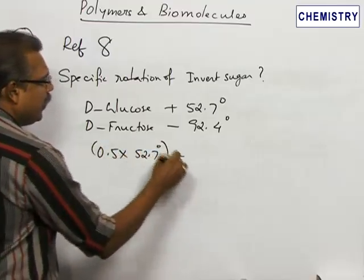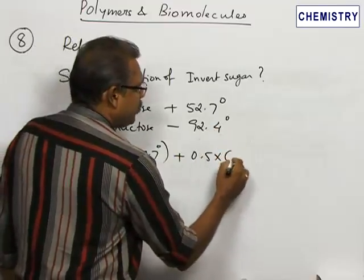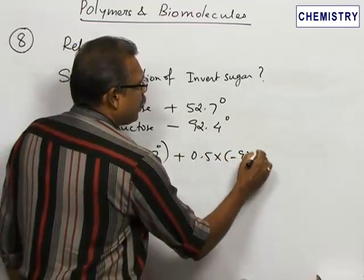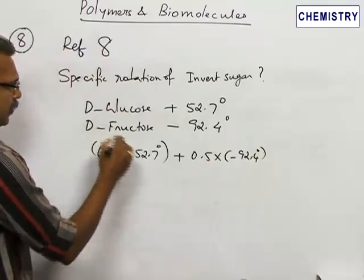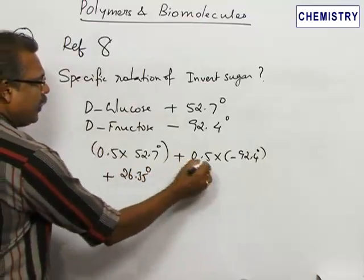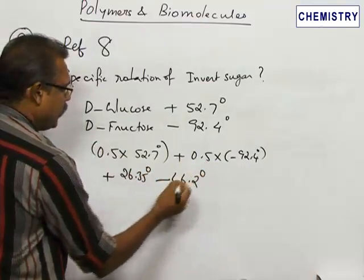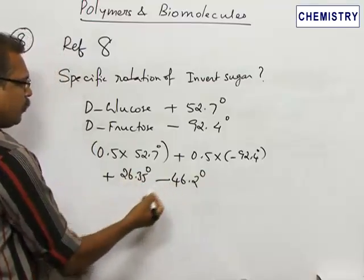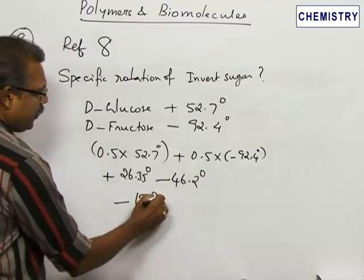This must be added to 0.5 into minus 92.4 degrees, and this will give plus 26.35 degrees and this overall minus 46.2 degrees. The net result, the algebraic sum we are taking, and here minus 19.85 degrees.